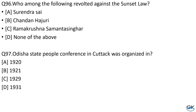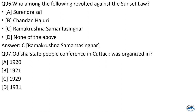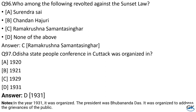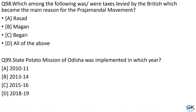Question No. 96: Who among the following revolted against the Sunset Law? Option A: Surendra Sai. Option B: Chandan Hachuri. Option C: Ramakrishna Samanta Singhar. Option D: None of the above. The answer is Option C, Ramakrishna Samanta Singhar. Question No. 97: Odisha State People Conference in Cuttack was organized in which year? Option A: 1920. Option B: 1921. Option C: 1929. Option D: 1931. The answer is Option D, 1931.